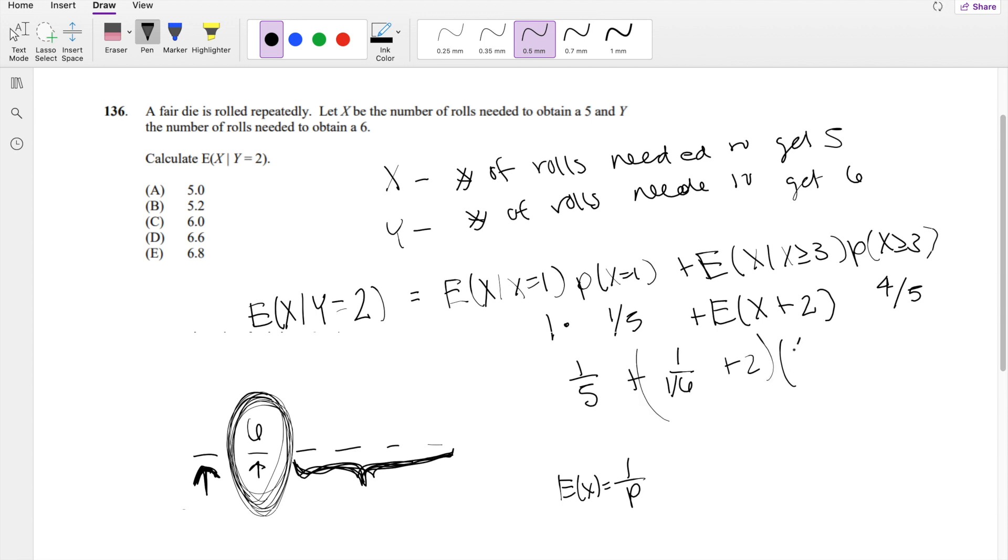So this whole thing times 4/5. So this is also equal to 1/5 plus 6 plus 2 times 4/5, which equals 1/5 plus 8 times 4/5, which is equal to 6.6 or answer D.